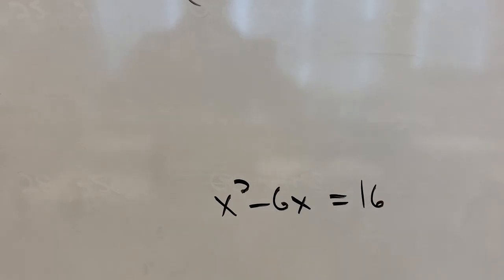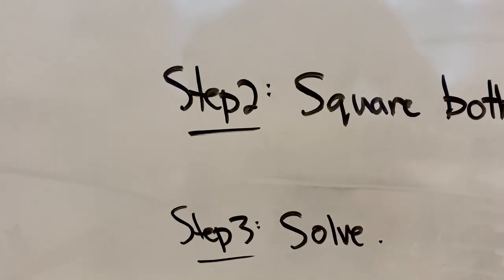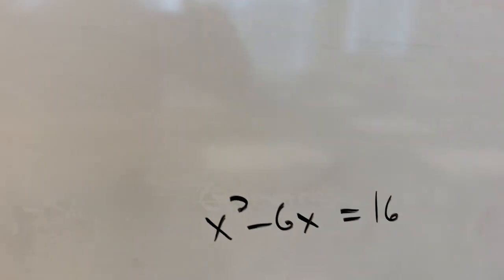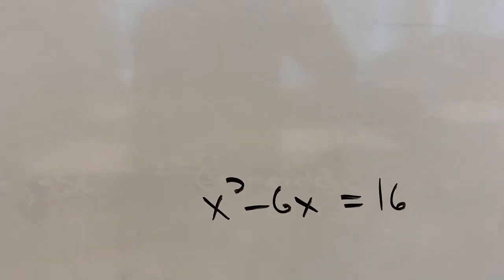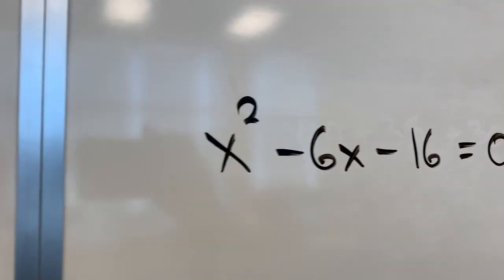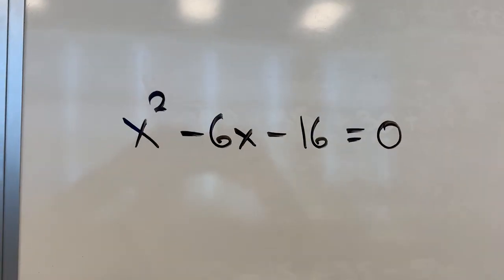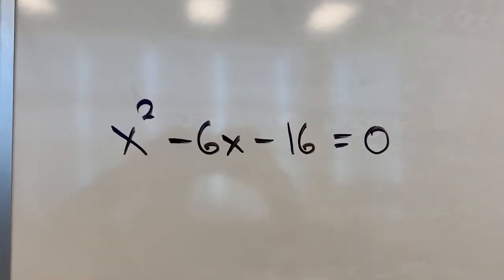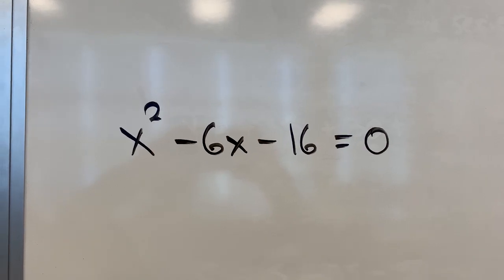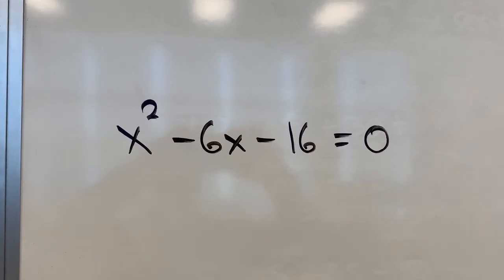So I have x squared minus 6x equals 16. Now that should look a bit more familiar to you, because we spent much time in Chapter 4 solving equations like that. So step 3, I just put solve, and so whatever equation you end up with here, we're going to figure out a way to solve it. In this case, it's quadratic, so we'll make it equal to 0, and see what happens from there. So if I make that equal to 0, I have something that hopefully factors. Two numbers multiply to negative 16 and add to negative 6, negative 8, and positive 2.